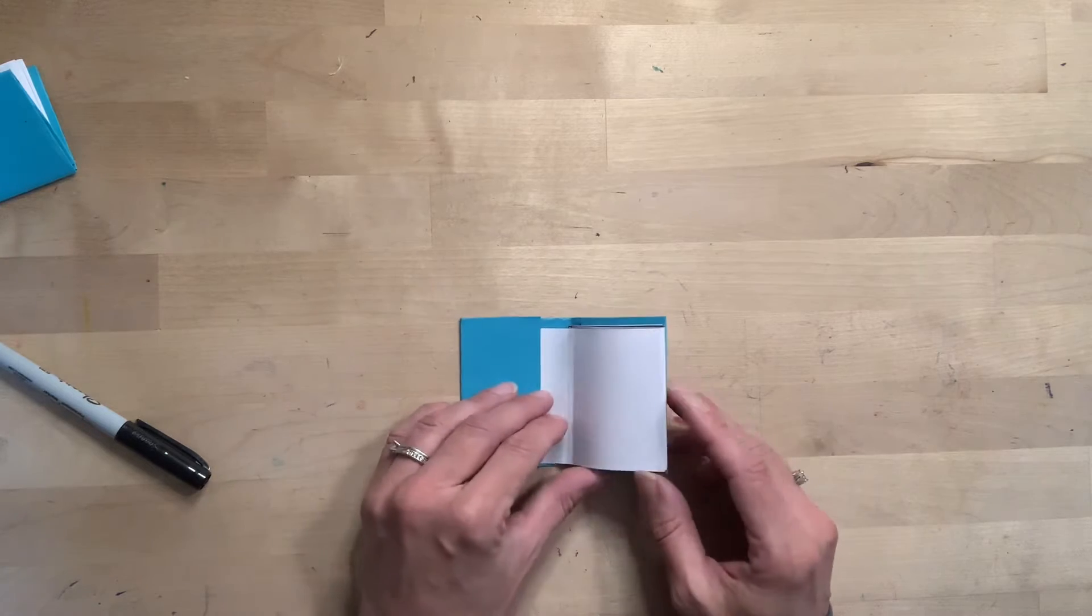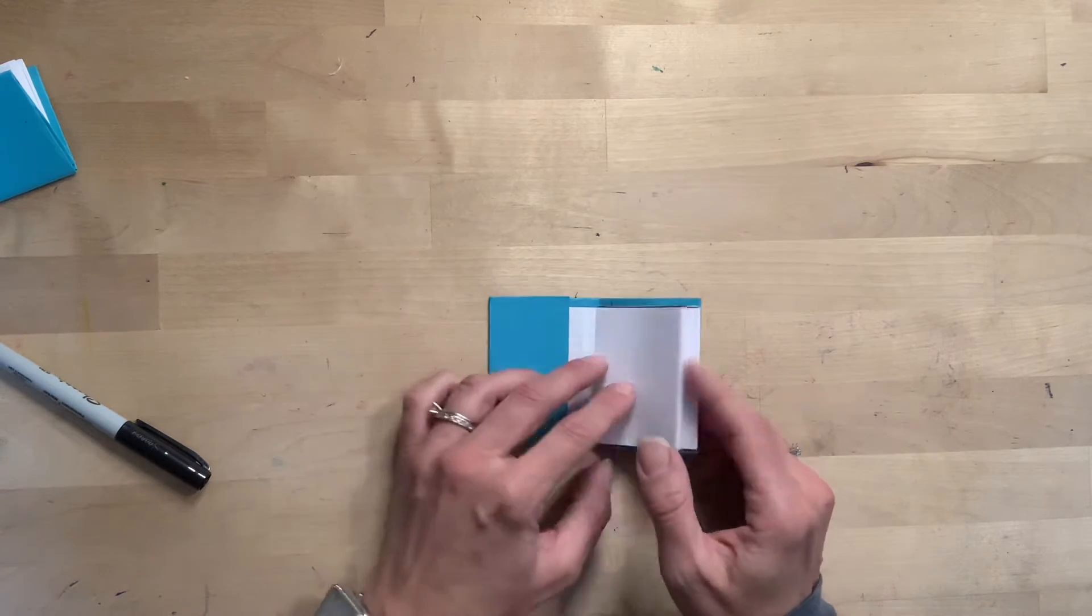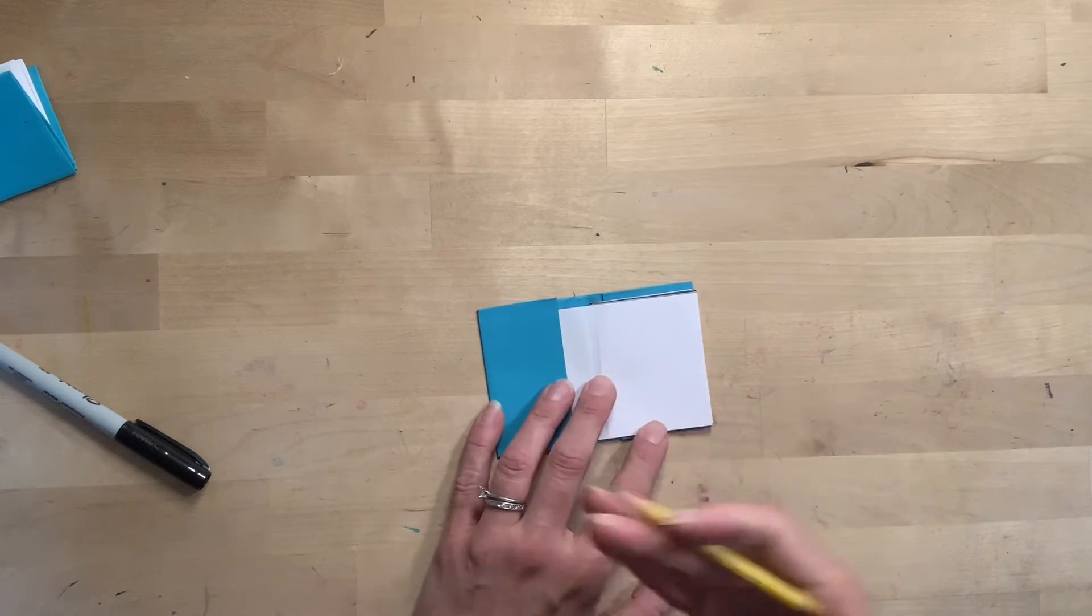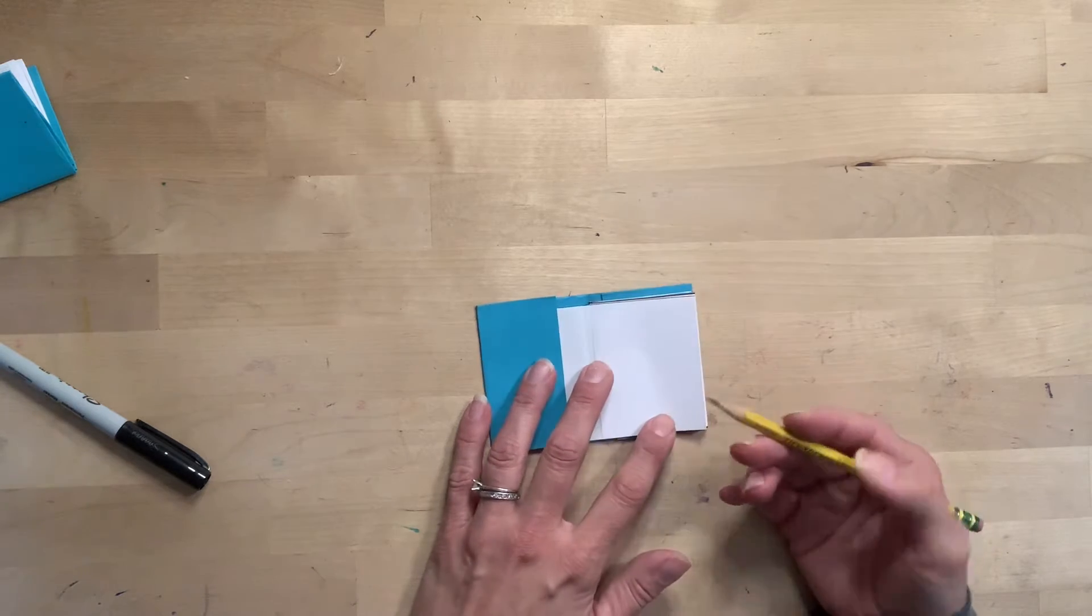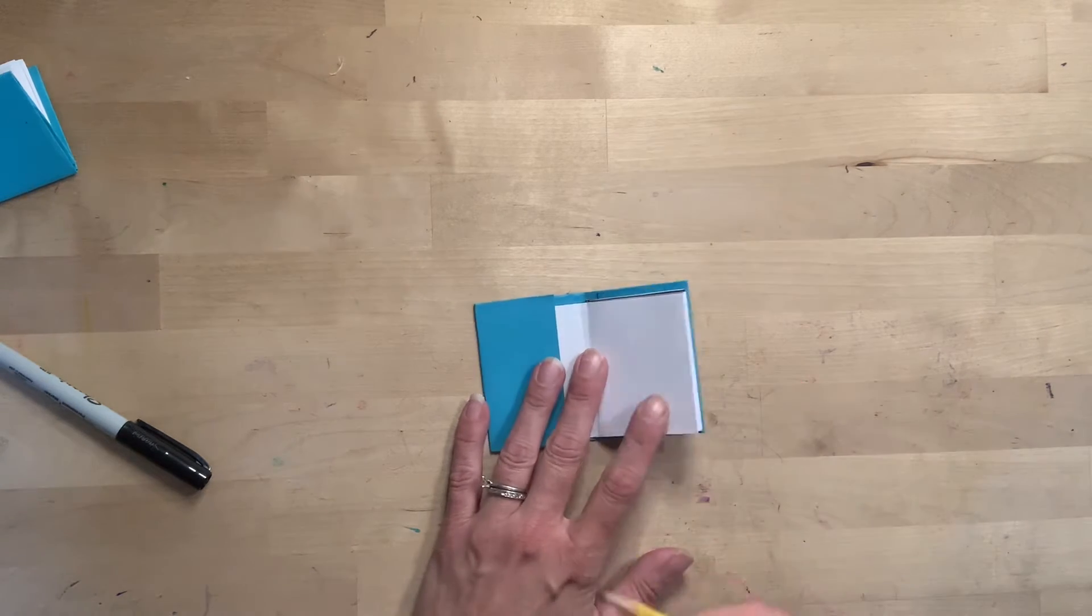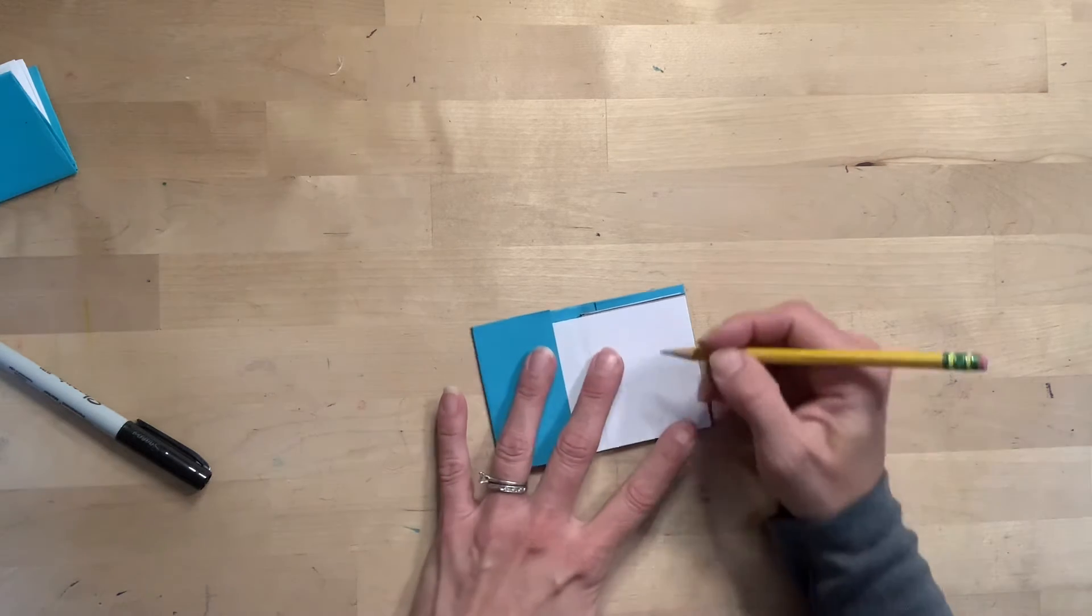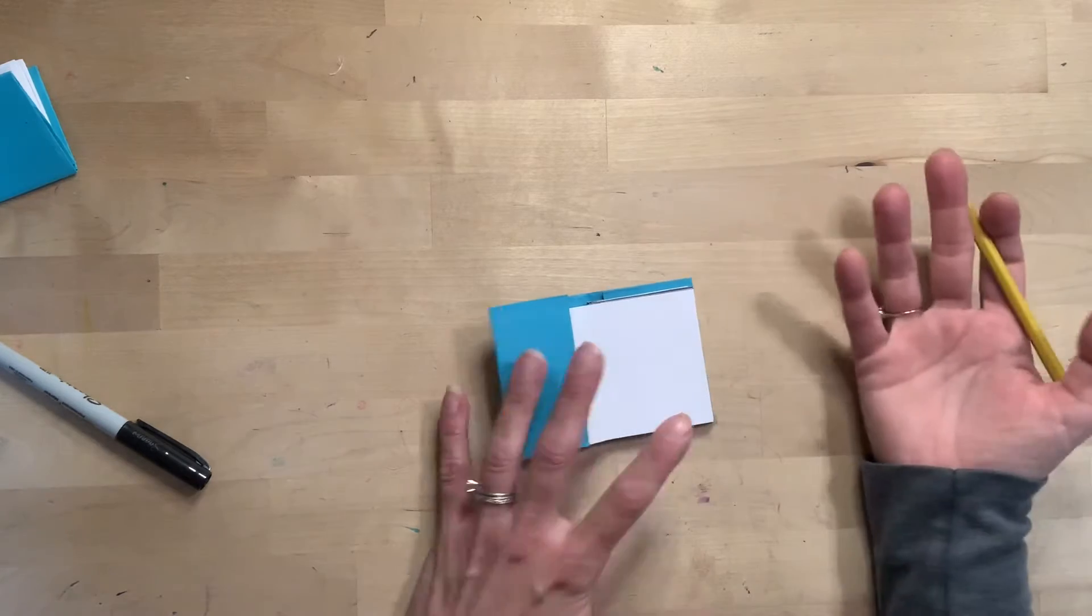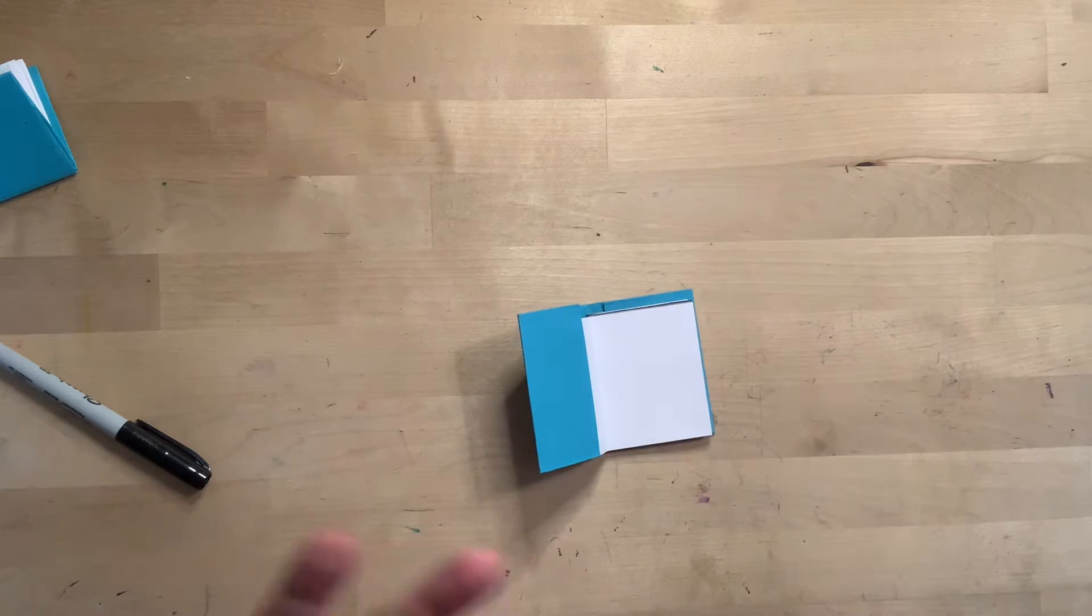Then inside your book, if you can't guess already, on each page you're going to put something about you. So different things: your favorite color, your birthday, your favorite animal, what you like to do, your hobbies, your favorite video game character. It can be anything about you. So on the very first page, if you're going to put your birthday, put something like that. Do something that just introduces yourself.